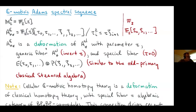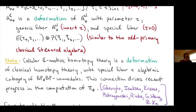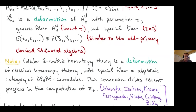Last time we talked about the setup for the C-motivic Adams spectral sequence. On the screen are the key formulas for the homology of a point and for the dual Steenrod algebra. We talked about how this is a deformation with parameter tau, deforming the classical situation, and at the end I discussed a philosophy about where this deformation really lifts the homotopy theories.